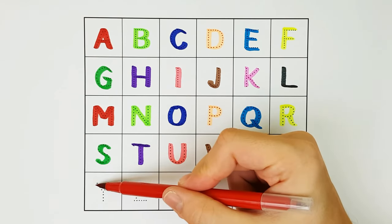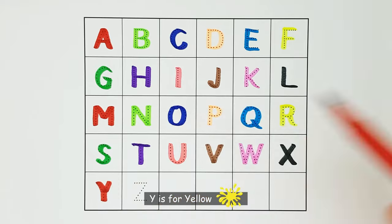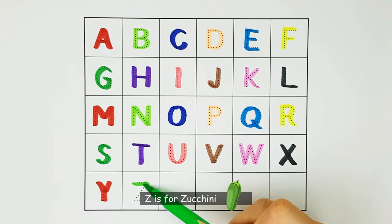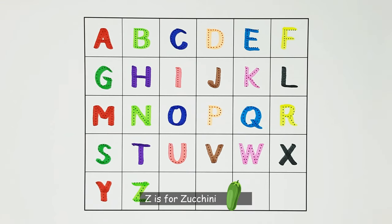Y. Y is for yellow. Y. Z. Z is for zucchini. Z.